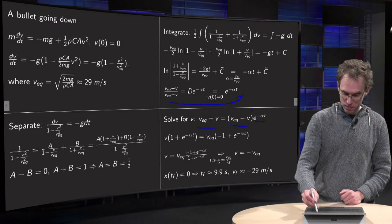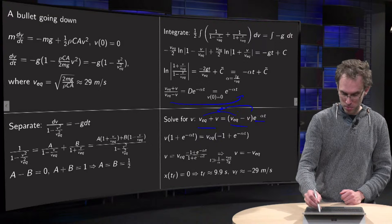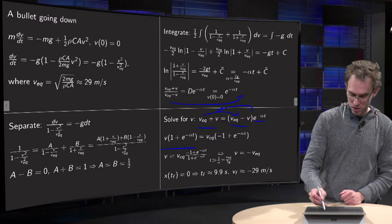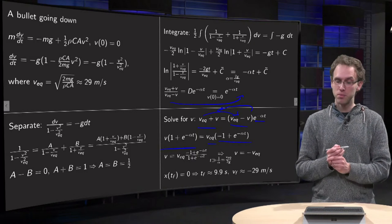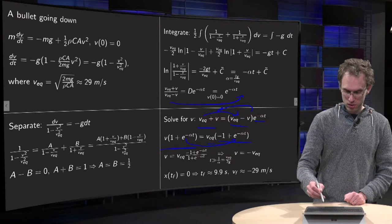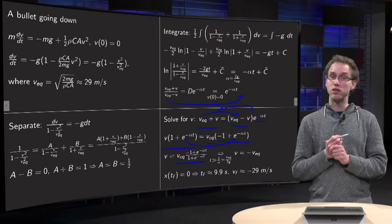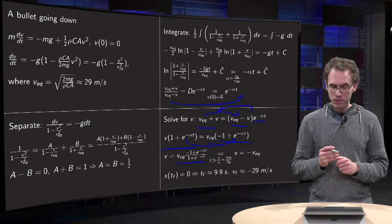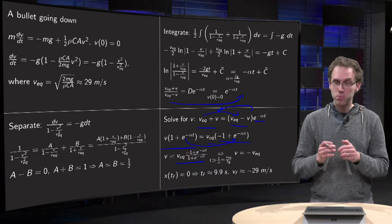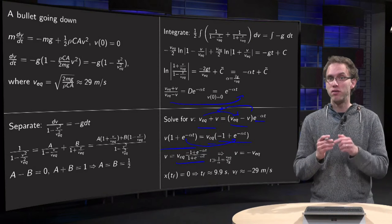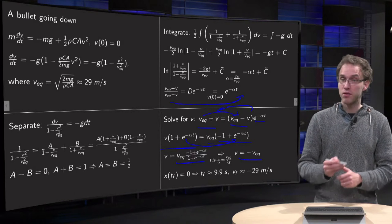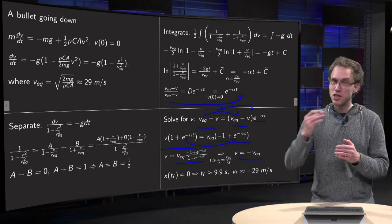We get v times (1 plus e^(minus alpha·t)) equals v_equilibrium times (minus 1 plus e^(minus alpha·t)), and dividing gives an expression for v. Now if t is much bigger than 1/alpha, then alpha·t is a very large number, and v approaches minus v_equilibrium in this limit.